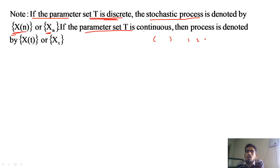If the parameter set T is continuous — meaning its value lies in a particular interval — then the process is denoted by x(t) or x subscript t. If it is continuous, the index is t; if it is discrete, the index is n.